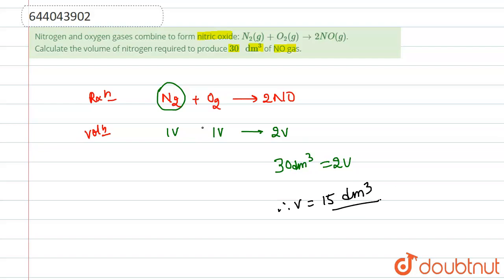So the value of V is 15 dm³. From here, we can say that 15 dm³ of nitrogen is required to produce 30 dm³ of NO gas. This is our answer. Thank you.